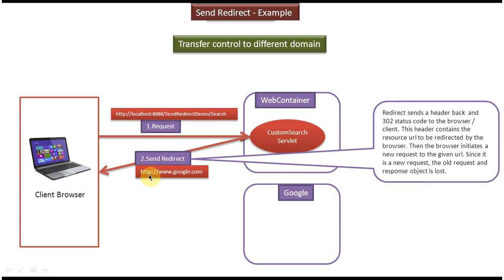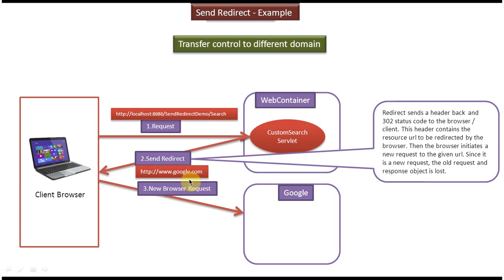In this case the new URL is www.google.com. Once the client reads that 302 status code, it understands it has to redirect the request to the new URL. The client gets that new URL from the location header. From the location header it takes the new URL, which is www.google.com, and makes a new request to the Google website. The Google website receives the request, processes it, and sends the response back to the client.